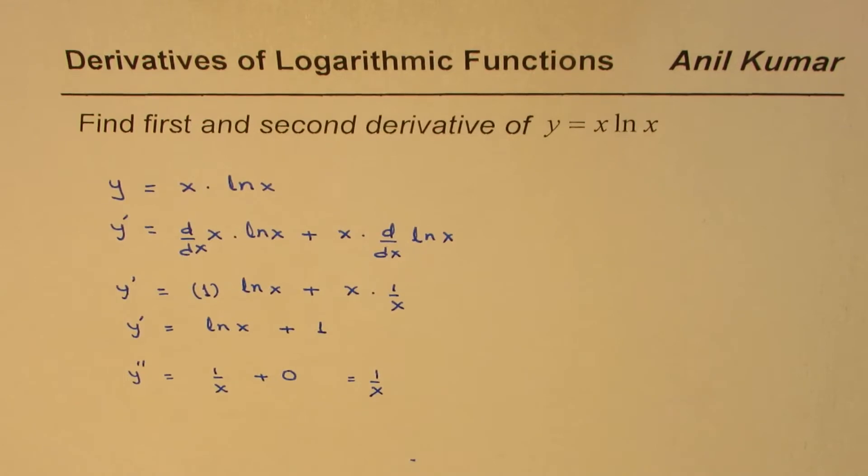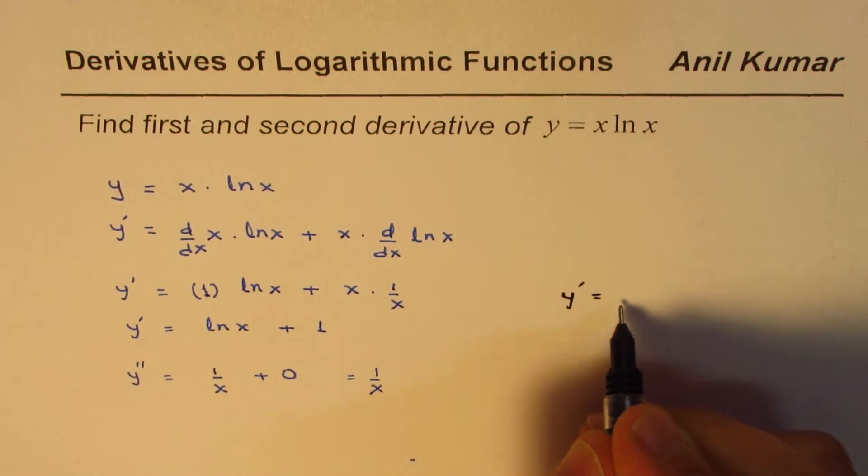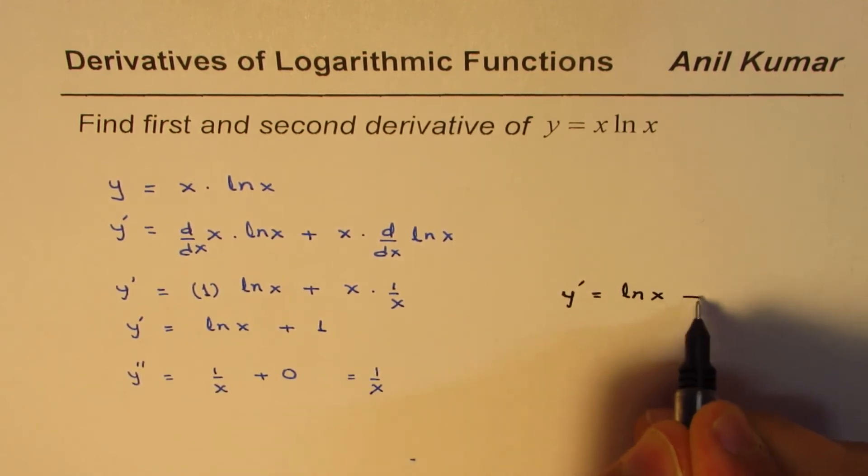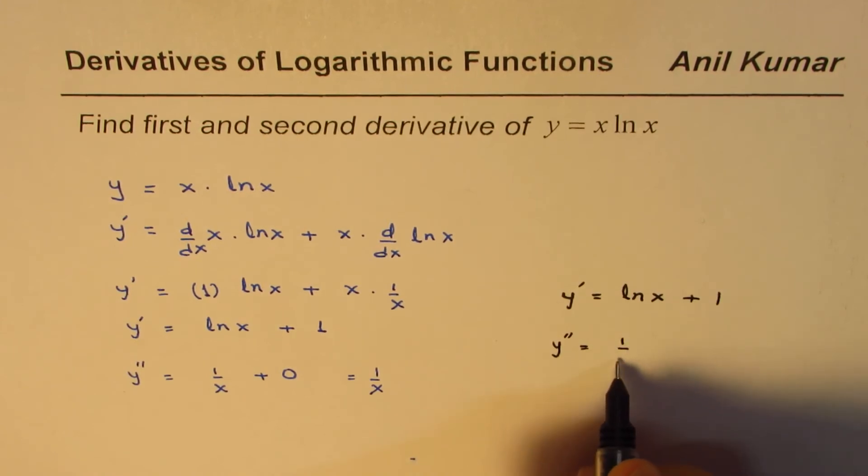So that is how you could find first and second derivative of this function. So we can write down our answer and that is the first derivative y dash is equals to ln x plus 1 and the second derivative is equals to 1 over x.